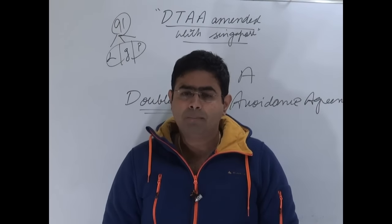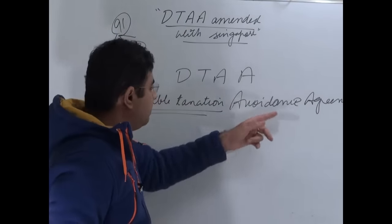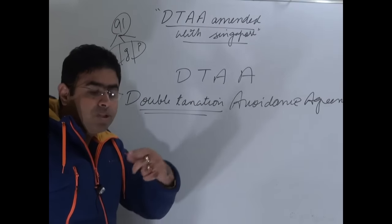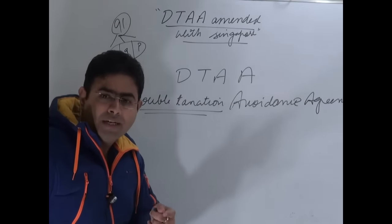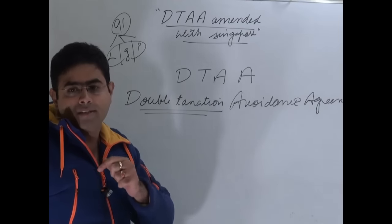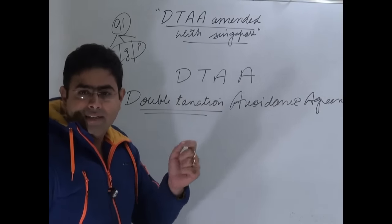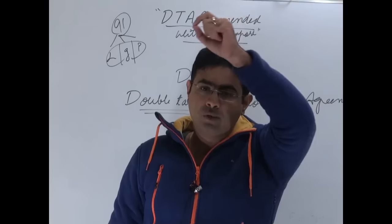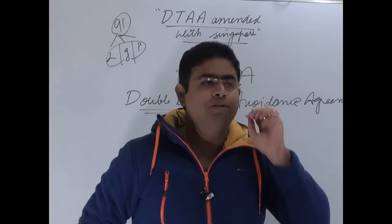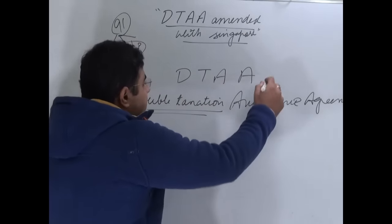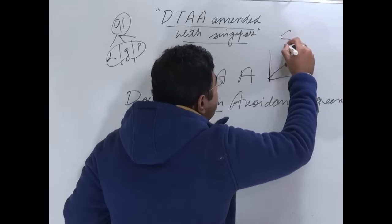In order to assuage the concerns, in order to placate the concerns, double taxation avoidance agreements were signed with the countries so that nobody who would be doing investment in India would be taxed doubly. Either they should pay taxes to their government or they should pay taxes to India. Such agreements came into being and were signed with various countries like Singapore.